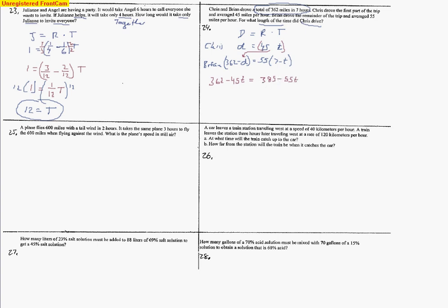Now we can go ahead and move some terms around. We'll bring the 55t over to the left-hand side by adding it to both sides, and we'll take this 362 away from the 385. When we do so, we end up with 10t equals 23. We're ready to do some division here. I divide by 10 on both sides and end up with t equals 2.3 hours, the time at which Chris ended up driving. That's why it's important to make sure you put your variables on what they're asking.